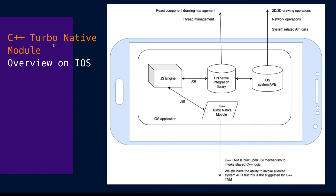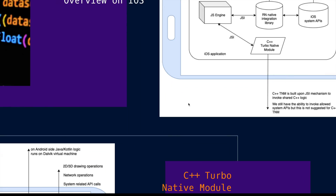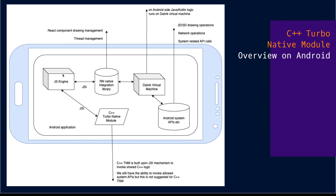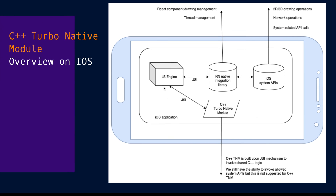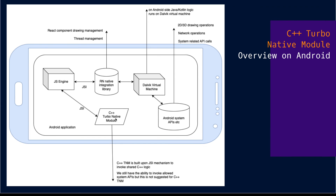So let's talk about C++ TurboNative Modules on iOS side. As you can see, we have the JavaScript engine and the React Native integration library. The JavaScript engine is invoking C++ TurboNative Modules by using JavaScript Interface. On the Android side, the JavaScript engine is again similar — we have React Native here and we have our C++ TurboNative Modules here. As you can see, we are invoking C++ TurboNative Modules by using JavaScript Interface, and we are invoking the same shared logic. This is the biggest difference between TurboNative Modules and C++ TurboNative Modules.